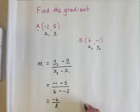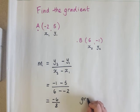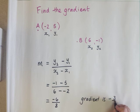So let's simplify my final answer. Therefore, the gradient is negative 3 over 4. Negative 3 quarters.